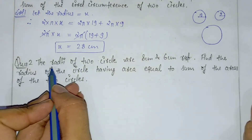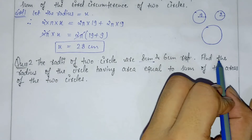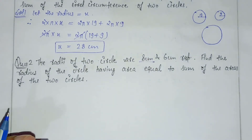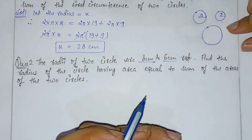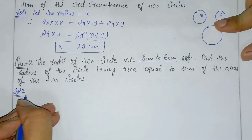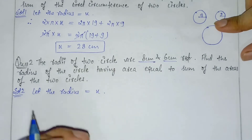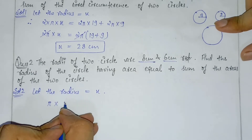Question number 2: the radii of two circles are 8 cm and 6 cm. Find the radius of the circle having area equal to the sum of the areas of the two circles. In question 1 we found the radius where circumference equaled the sum; here we find the radius where area equals the sum. Let the radius be x. The area of the new circle is πx².